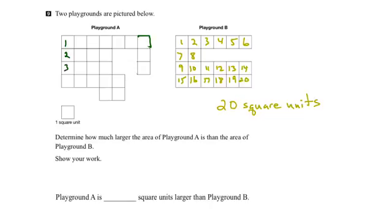So the first column is 1, 2, 3, 4 square units. And if I went all the way to the end and numbered all of the squares, I'd end up with 24 squares. So that means the area of Playground A is 24 square units.